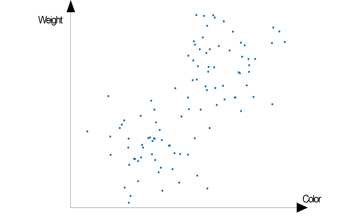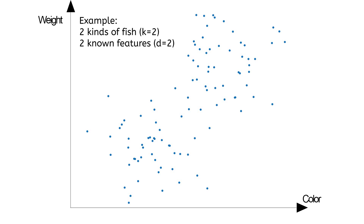Let's suppose you observe two features: weight and color, and you record them for each fish. If you want to draw it on a diagram, it would look like this. If you have two features, that means you have a two-dimensional diagram. Now you want to discriminate between those two classes, these two kinds of fish.